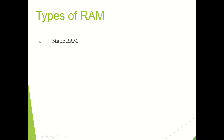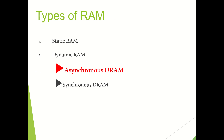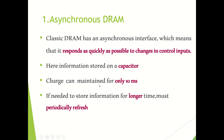Now we are going to discuss the two types of dynamic RAM. RAM is of two types: static and dynamic. Dynamic RAM is again of two types — the first is asynchronous DRAM and the second is synchronous DRAM. We will first discuss the asynchronous type DRAM.